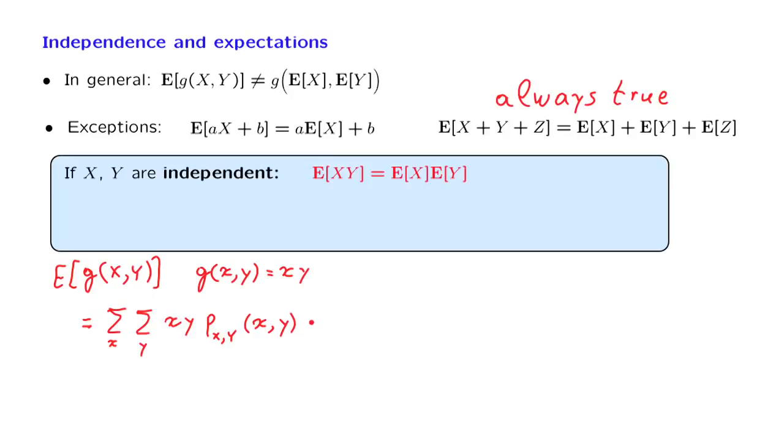Now, using independence, this sum can be changed into the following form. The joint PMF is the product of the marginal PMFs.